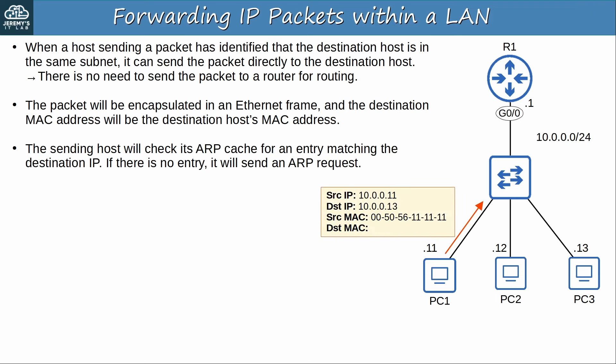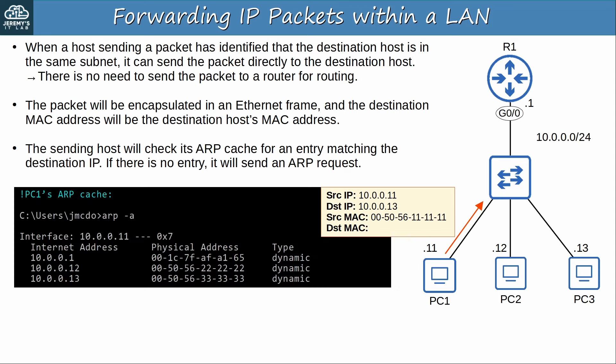So let's say PC1 is sending a packet to 10.0.0.13, PC3. The source MAC is 00:50:56:11:11:11 — this must be PC1's MAC address because it is the one sending the frame. The destination MAC should be PC3's, since the destination is in the same subnet. Here is PC1's ARP cache — there is an entry for PC3's IP address 10.0.0.13. So PC1 will use that MAC address as the destination of the frame and it is forwarded directly to PC3.